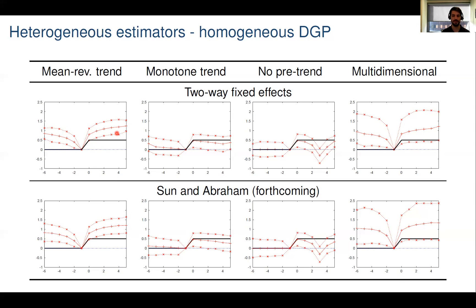The bottom row takes those same DGPs — again with homogeneous and static treatment effects — and applies an estimator designed to be robust to heterogeneous policy effects. The resulting estimates in the second row are almost identical to the simple two-way fixed effects estimates in all four DGPs, and so they are still severely biased. That is not particularly surprising: the reason the two-way fixed effects estimator is biased is because of confounding, not heterogeneous policy effects, since there are no heterogeneous policy effects here. In our paper, we consider a couple of alternative estimators also designed to be robust to heterogeneity, and the results are very similar.